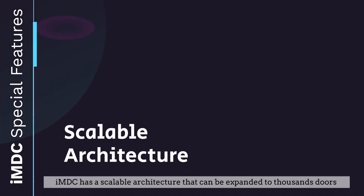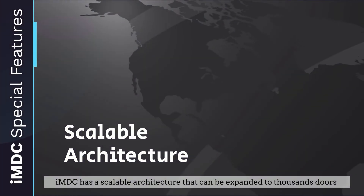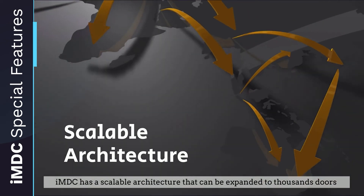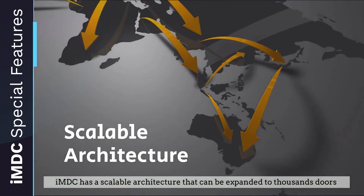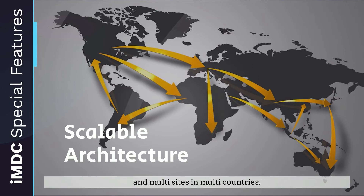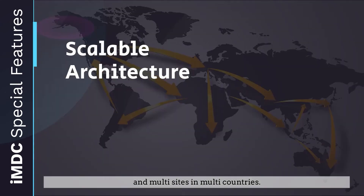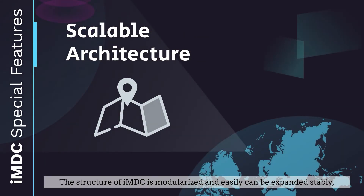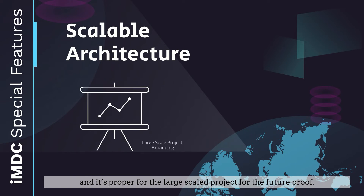3. Scalable Architecture. IMDC has a scalable architecture that can be expanded to thousands of doors and multi-sites in multi-countries. The structure of IMDC is modularized and can easily be expanded stably, making it suitable for large-scale projects and future-proofing.